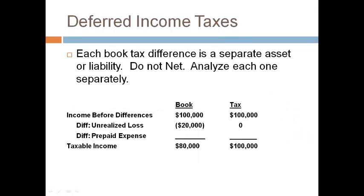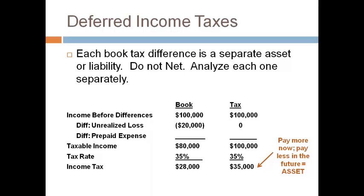A company with more than one book-tax difference cannot net them altogether. Whether the difference creates an asset or a liability must be determined by the impact each difference has on income by itself. This company has two differences: an unrealized loss and a prepaid expense. Assuming the unrealized loss is the only difference, the loss is not deductible for tax purposes until it is realized, so tax payable is higher now and will be lower in the future when the loss is realized. Paying less in the future is a deferred tax asset. Remember, the future is always opposite of the current year and the future determines the deferred tax.